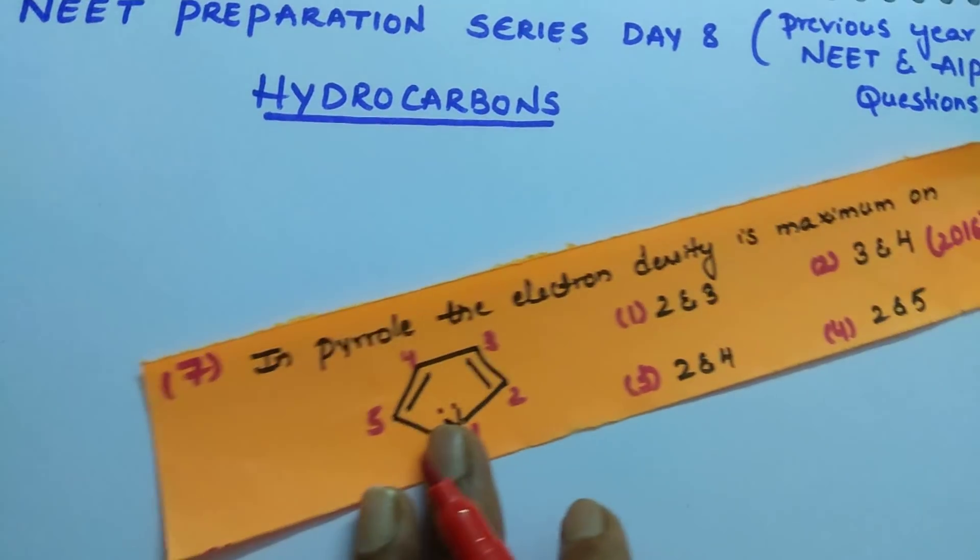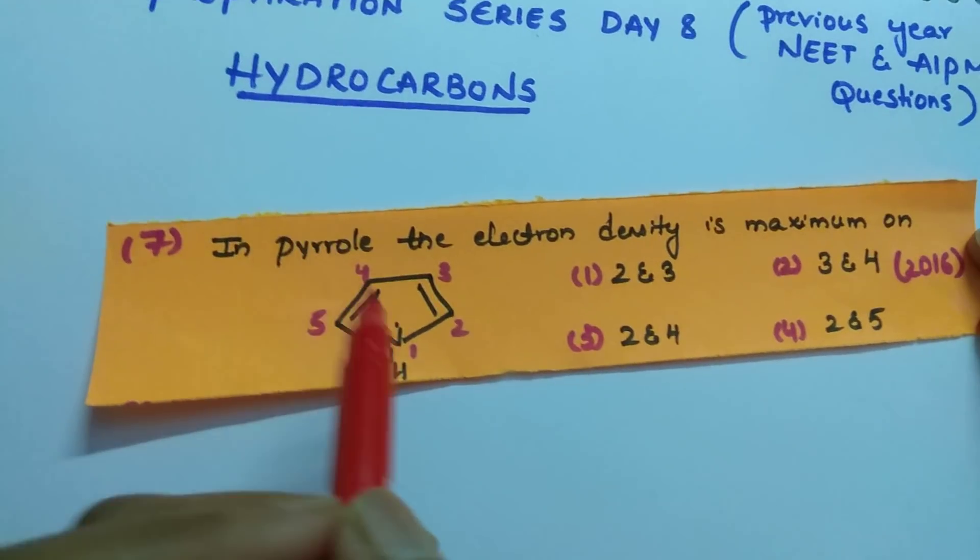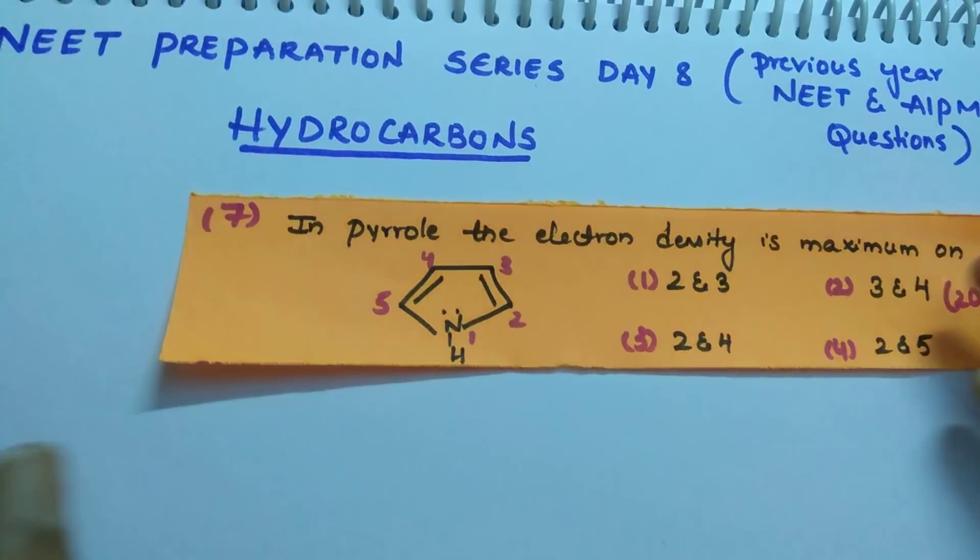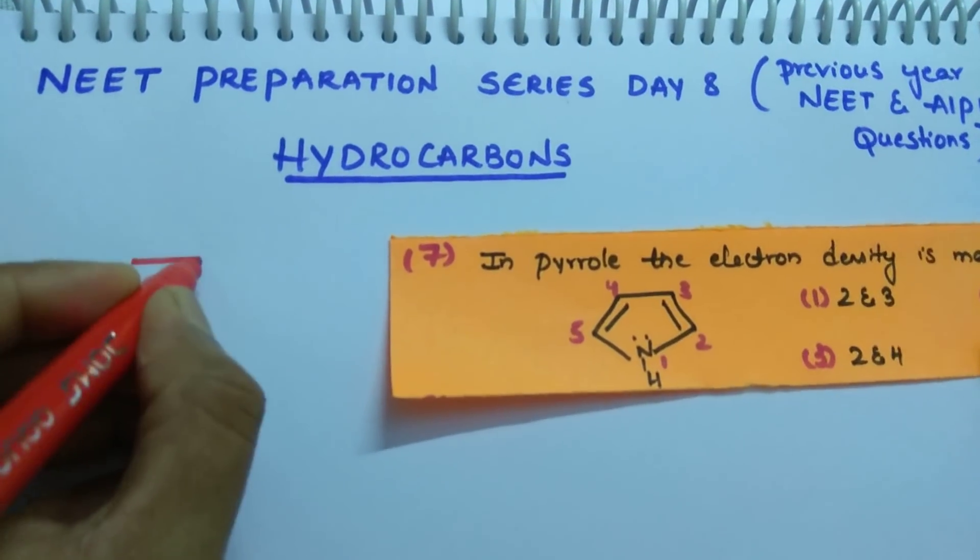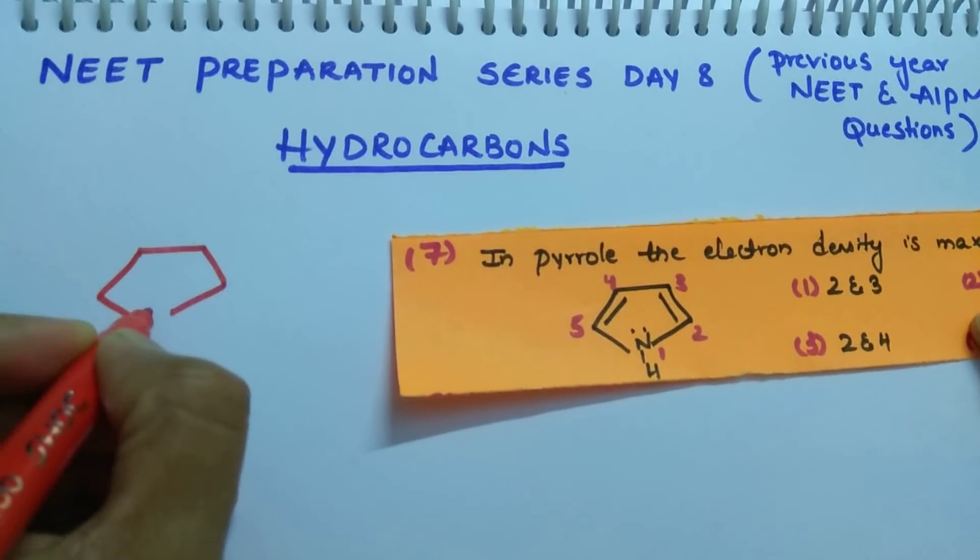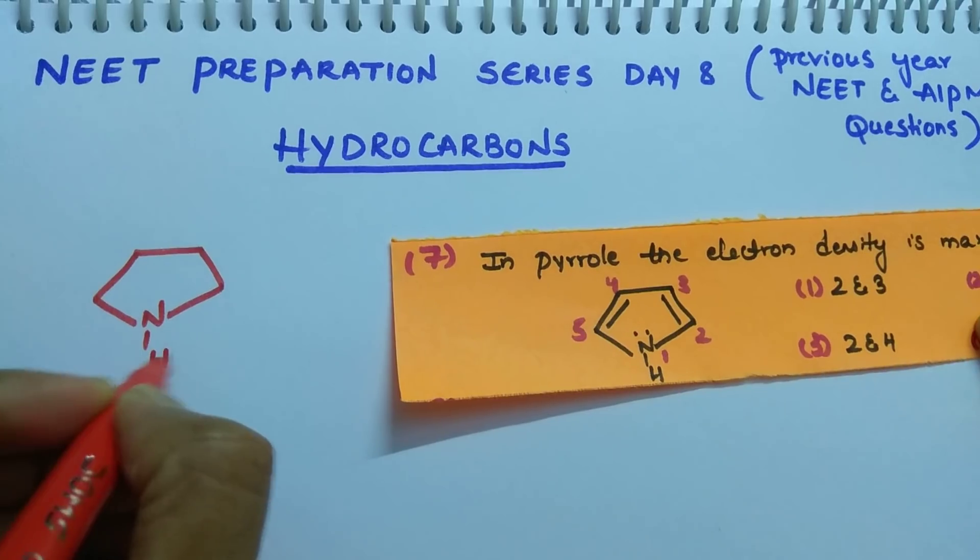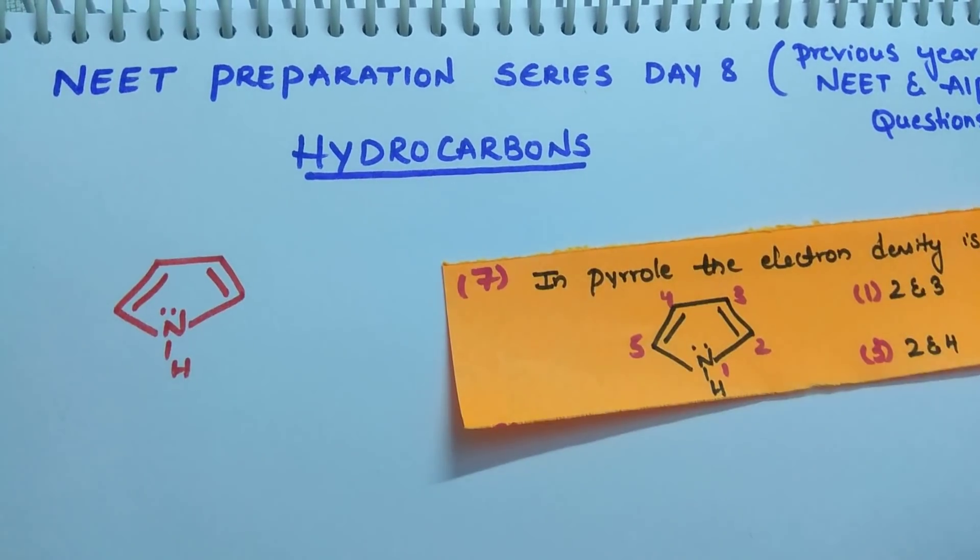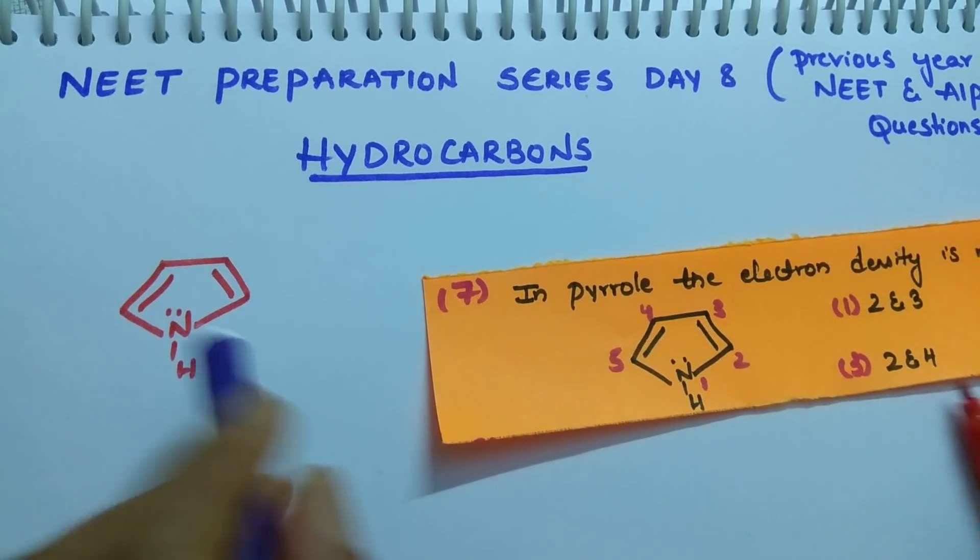Let us see the question from 2016. In pyrrole, the electron density is maximum on. Pyrrole is an aromatic heterocyclic compound. Why is it a heterocyclic compound? Because it is having carbon and nitrogen as well.